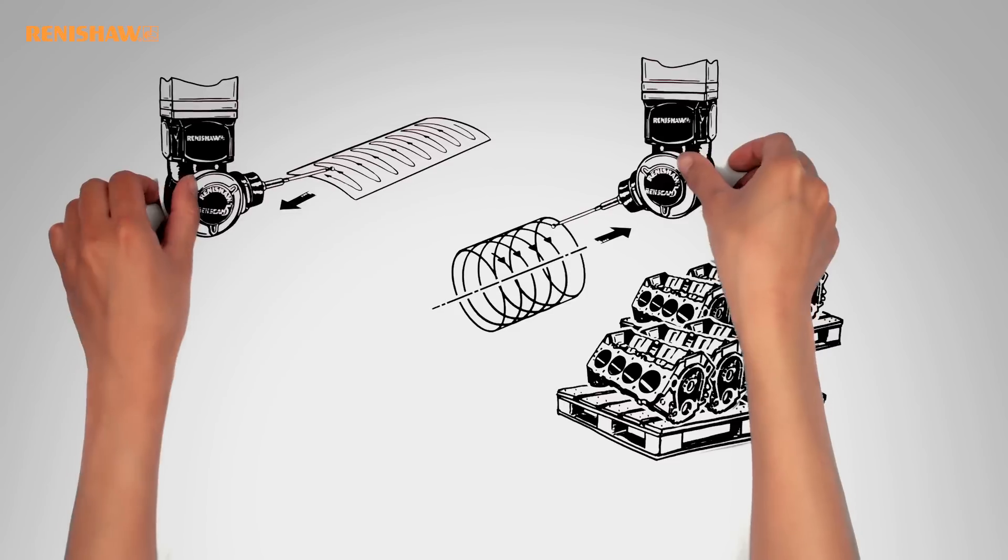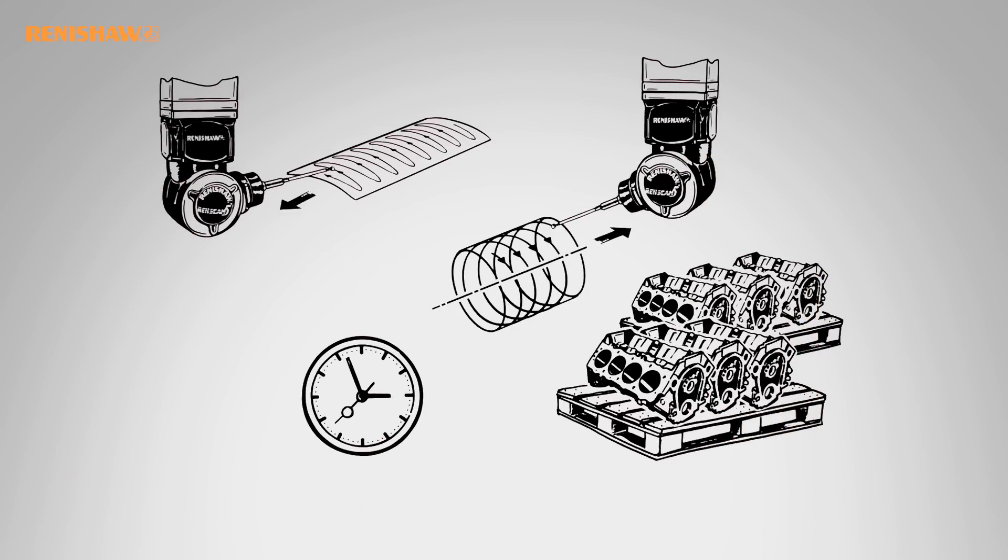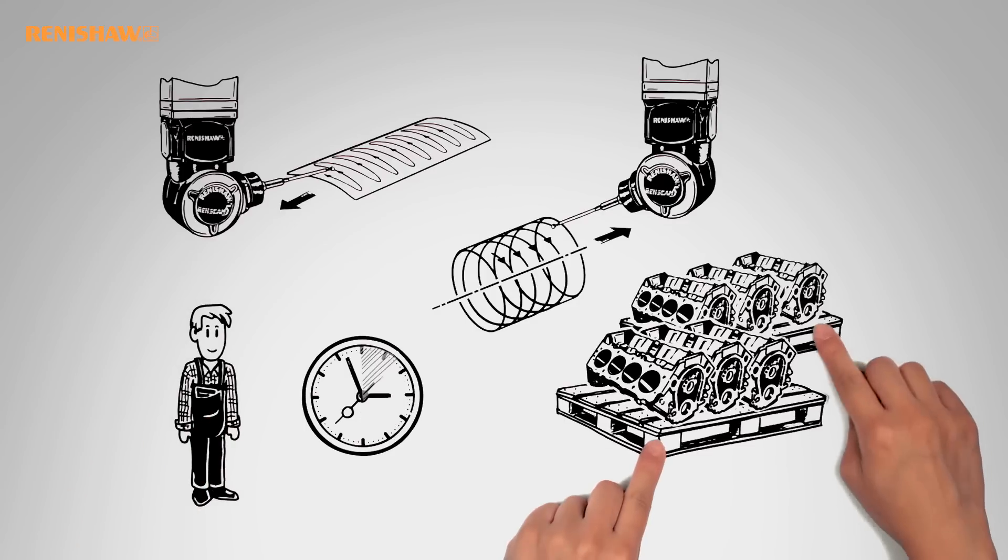Thanks to more effective measurement strategies, the time saved is enormous. Mr. Brown's requirement for measuring the cylinder block is no longer half an hour, but now just 7 minutes.